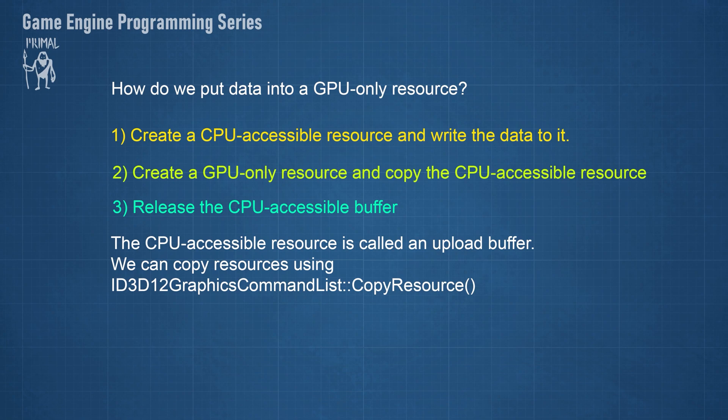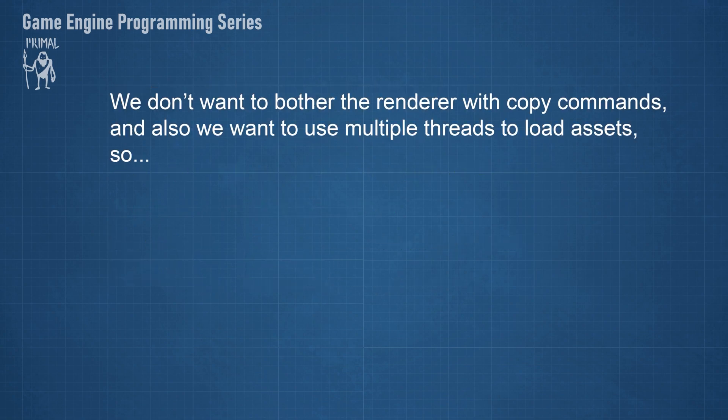We have a command that does the copying and we need to use a command list to record that command. Remember that commands are first recorded and then executed using a command queue. We already use a command queue to execute the graphics commands, but we don't want to bother our rendering pipeline with copy commands. I also want to be able to load the assets asynchronously, and that means we are going to use multiple threads.